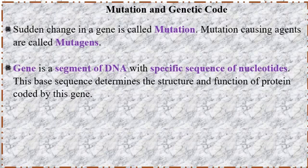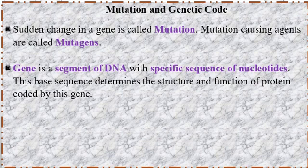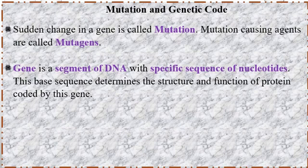A gene is a segment of DNA with a specific sequence of nucleotides. Nucleotides are arranged in a particular order on the DNA, and each gene has its own specific sequence of nucleotides.